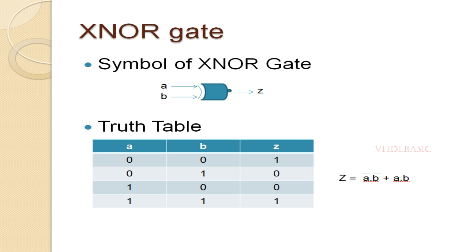This is the XNOR gate simple diagram where A and B are the inputs and Z will be the output. Referring to the truth table: whenever both inputs are in the same state — both zero or both one — the output Z will be one. Whenever both inputs are in different states, like 0-1 or 1-0, the output Z will be zero.